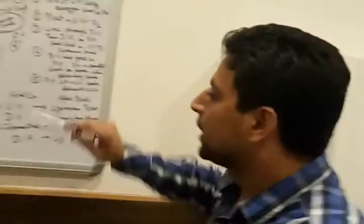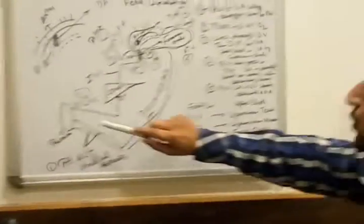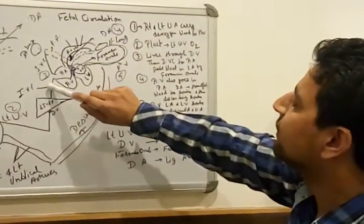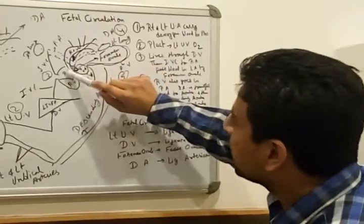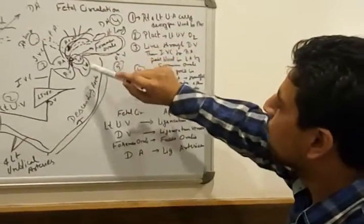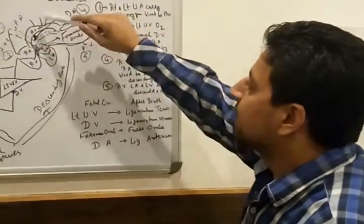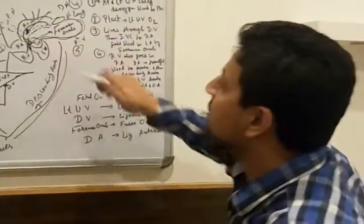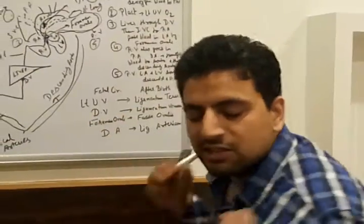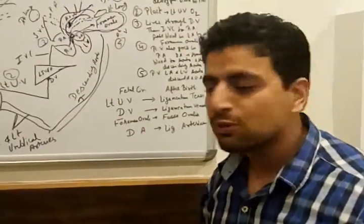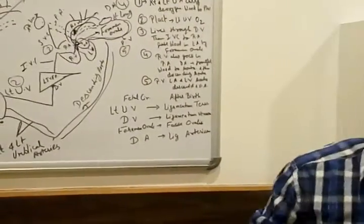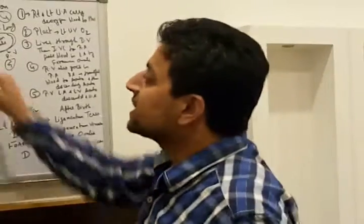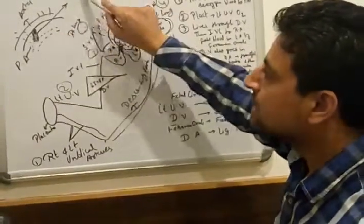Now you understand every circulation. Right and left umbilical arteries go into the placenta, then purified blood via left umbilical vein, then ductus venosus through the liver, then inferior vena cava and superior vena cava, then into the right atrium, right atrium to left atrium, left atrium to left ventricle, then into the aorta, then descending aorta, and then again the circulation starts. Another tract is right atrium to right ventricle, then pulmonary arteries. The lungs are collapsed here — little blood goes, not so much. There is a bifurcation between the pulmonary artery and the aorta, known as ductus arteriosus.